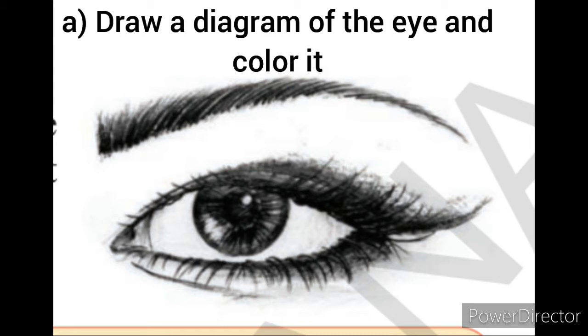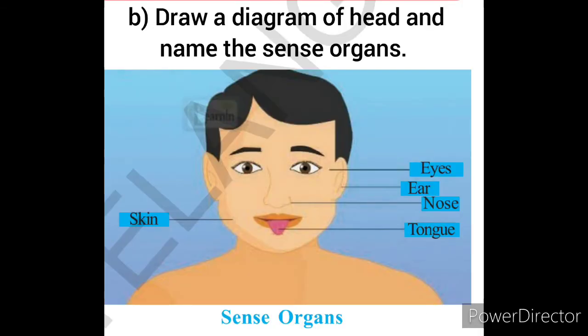Next, activity B: draw a diagram of the head and name the sense organs. You have to draw the head and write all the parts that are sense organs. Draw it neatly and name all the sense organs: eyes, nose, tongue, and skin.